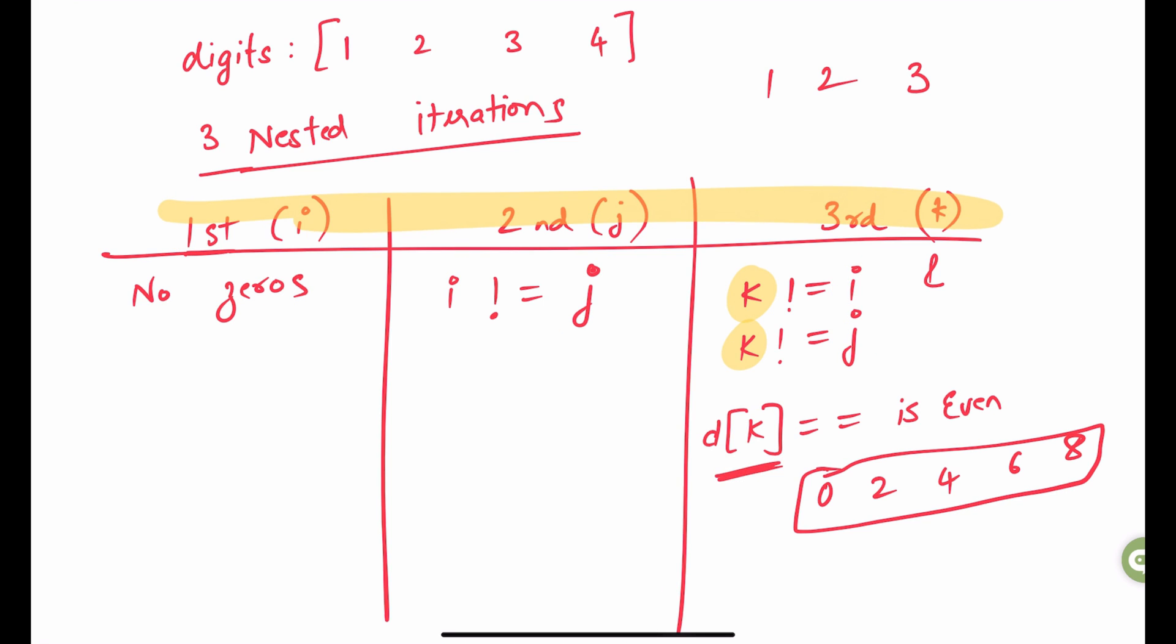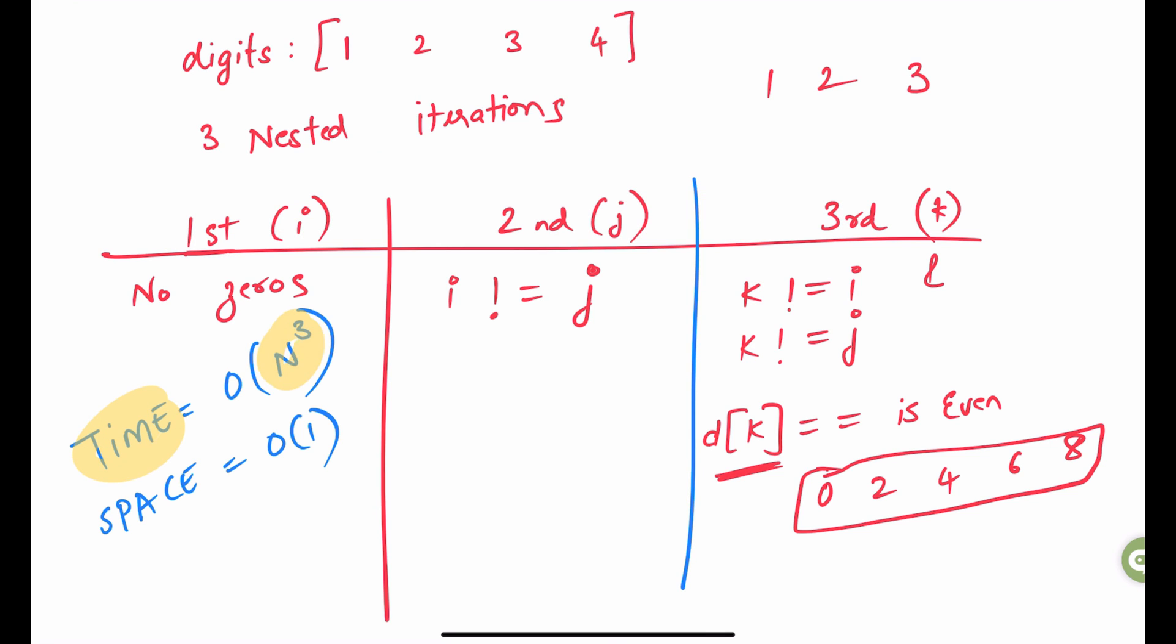If we use these rules to build our solution, we will be able to calculate all of the unique numbers which are 3-digit and even. With this solution, our time complexity is O(n^3) because we are running 3 nested iterations to identify or calculate the 3-digit number. And the space complexity is O(1) as we are not building any additional collection during the calculation, just building the output.